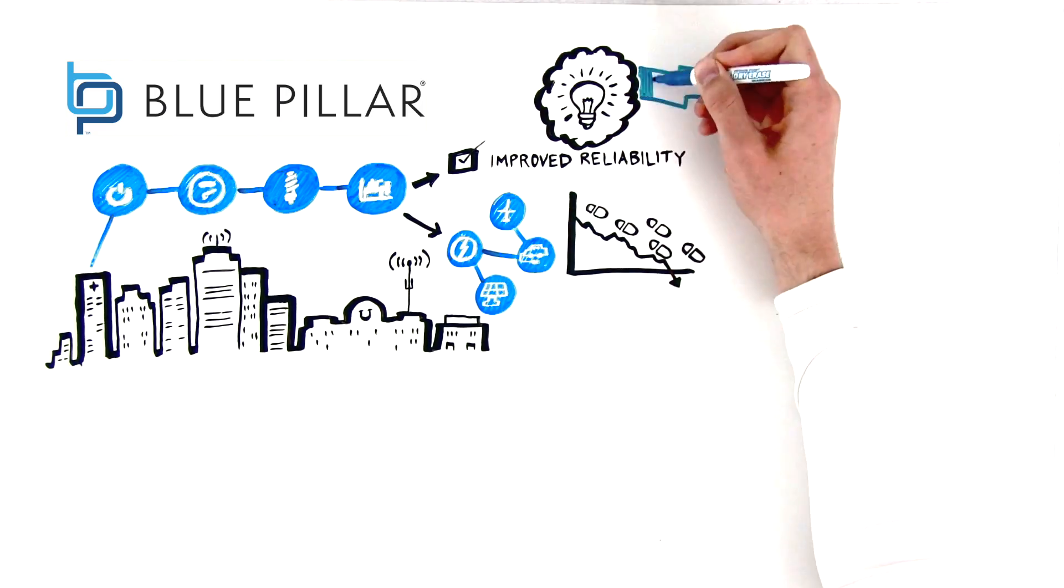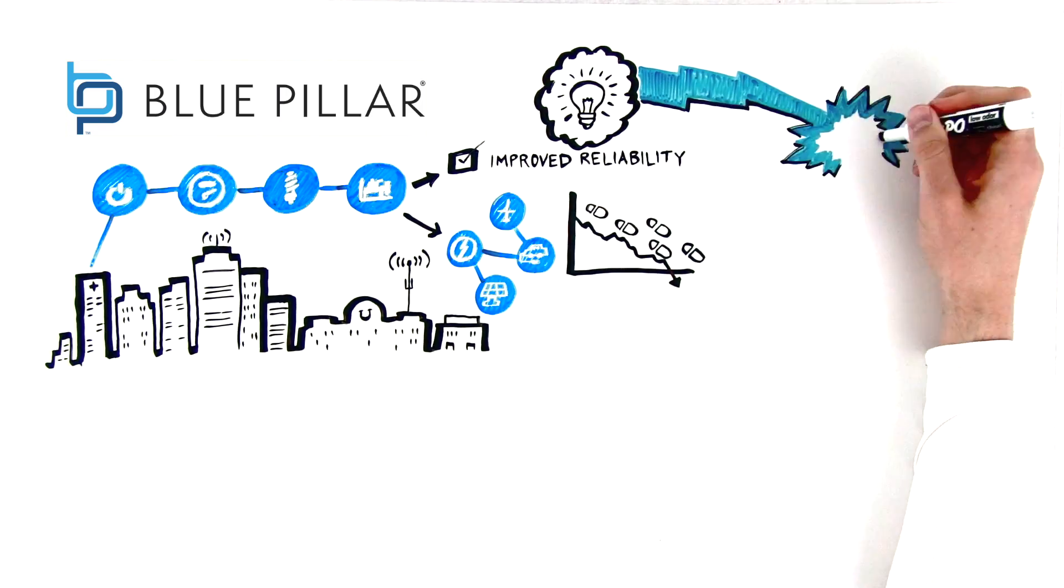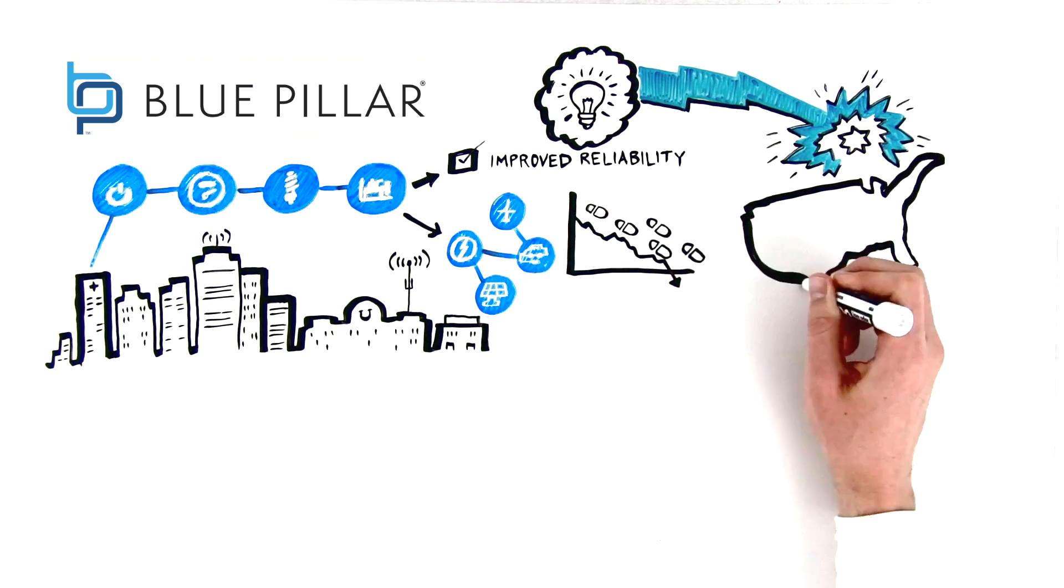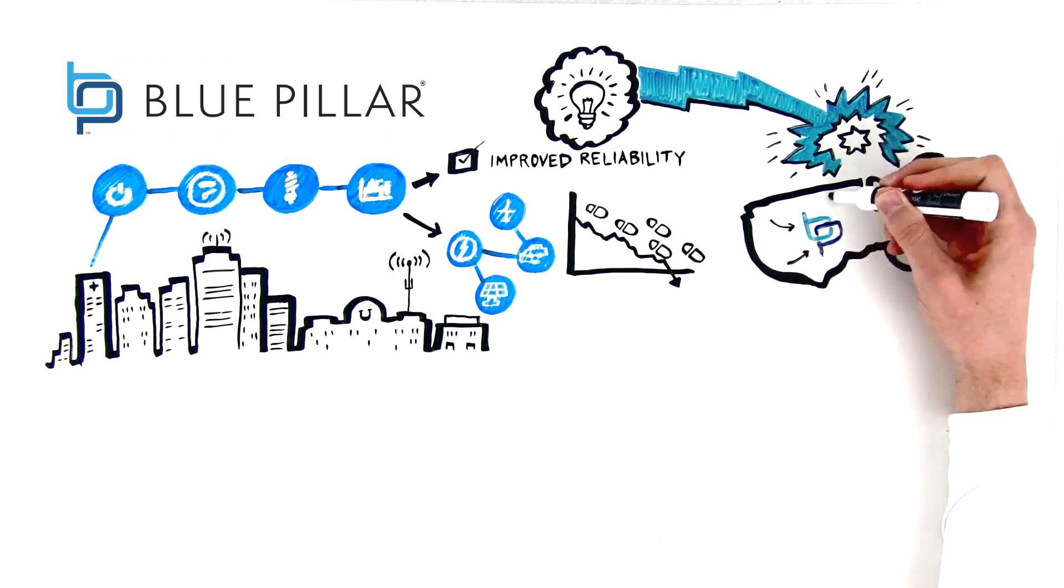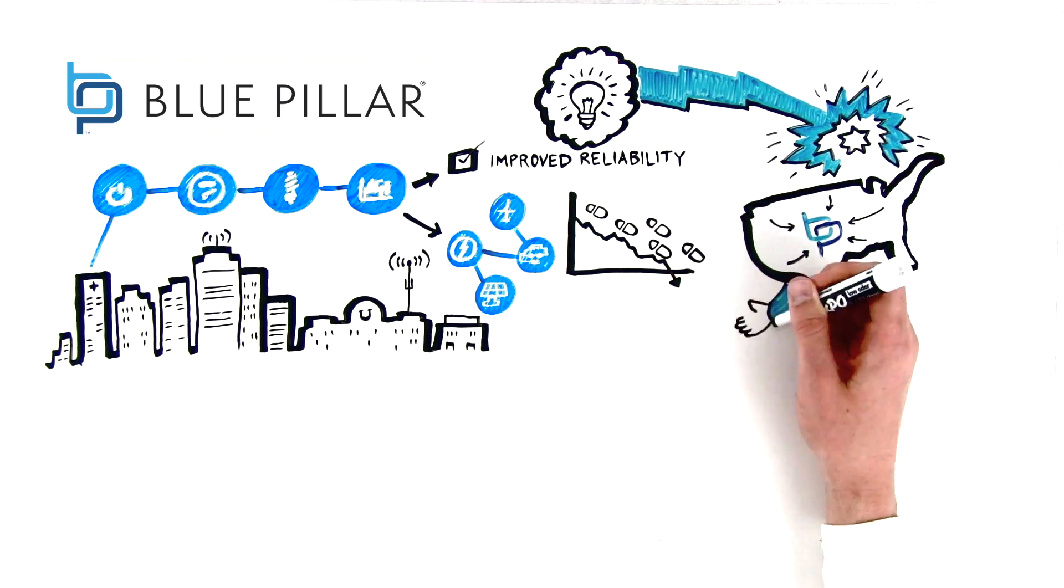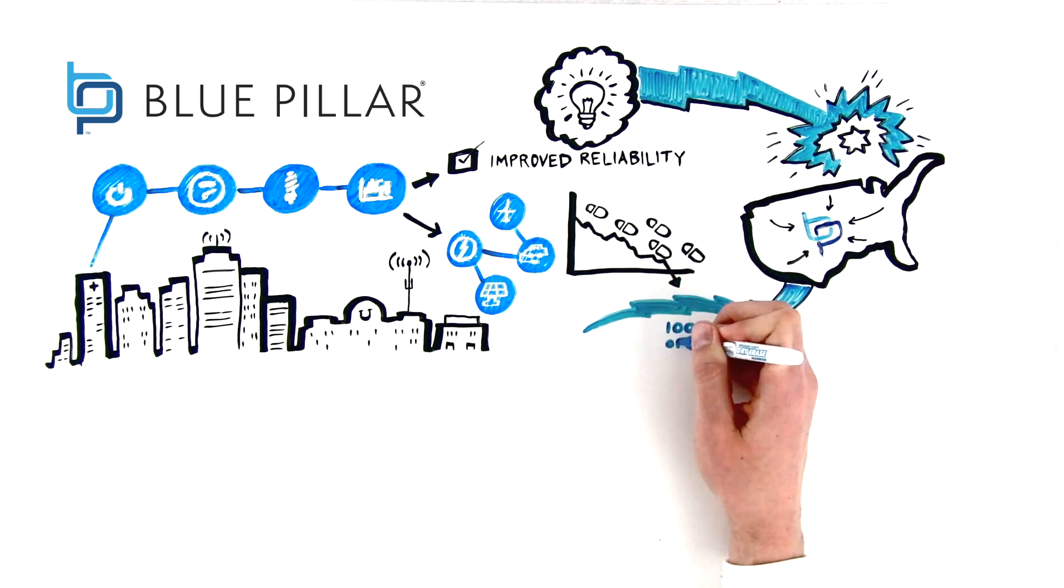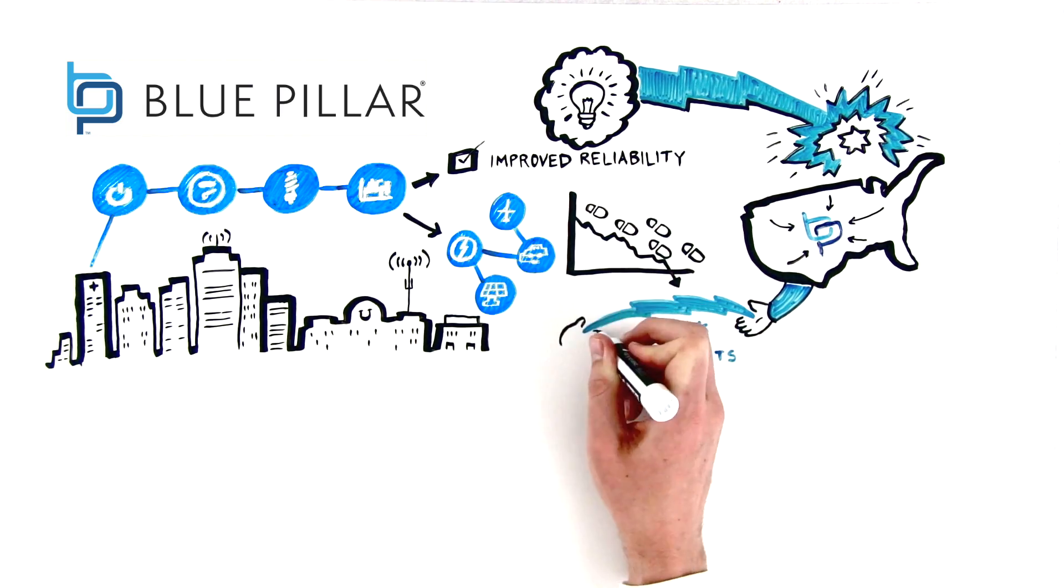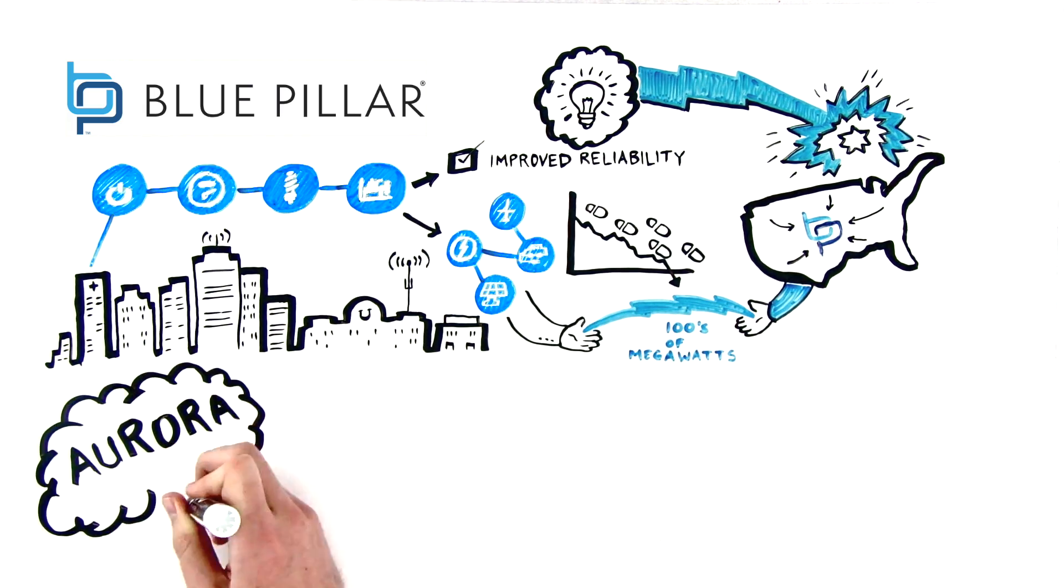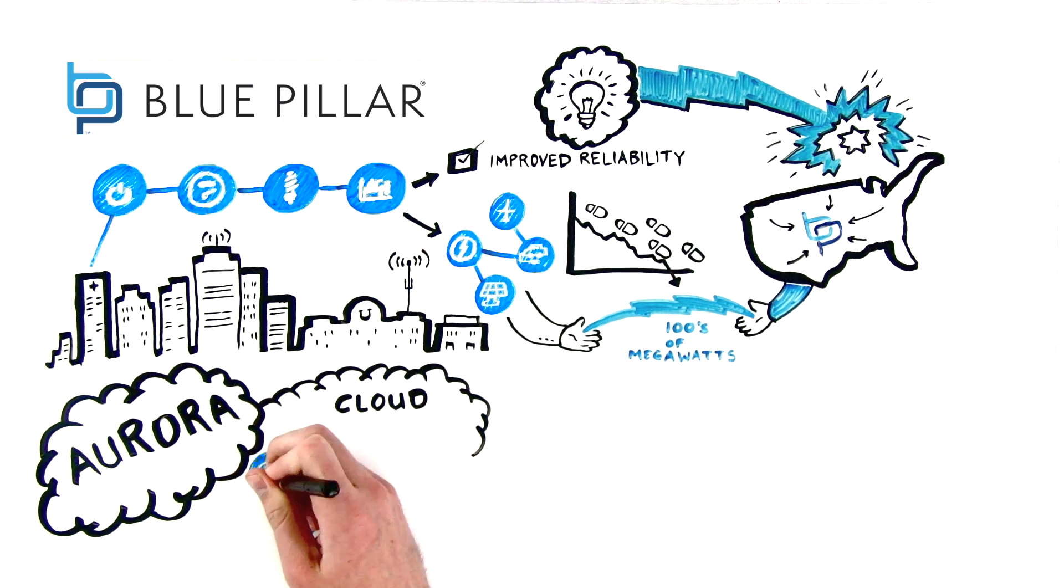In the energy industry, the right idea catches at lightning speed. Before long, large nationally recognized energy providers turned to Blue Pillar to connect hundreds of megawatts of behind-the-meter distributed generation at their largest commercial and industrial customers. This led to the birth of Aurora as an energy control networking platform.